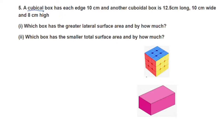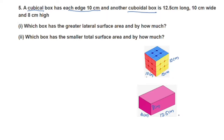One is a cubical box and a cuboidal box. The first cubical box is a square shape — each edge is 10 cm. The cuboidal box has length 12.5 cm, width 10 cm, and height 8 cm. Each side of the cuboidal box is a rectangle shape.